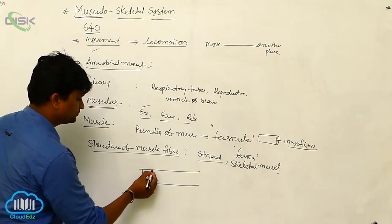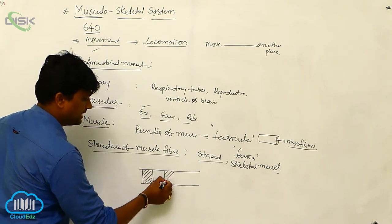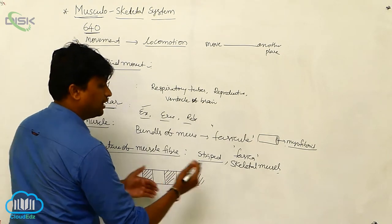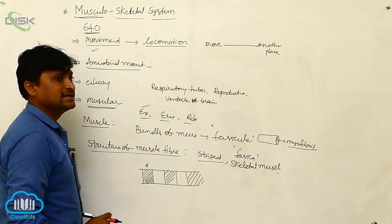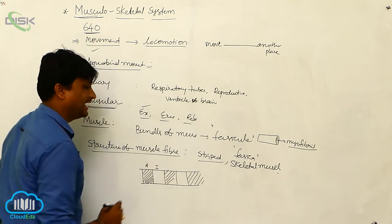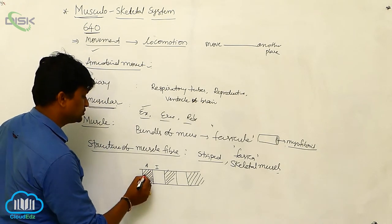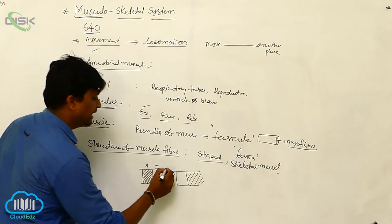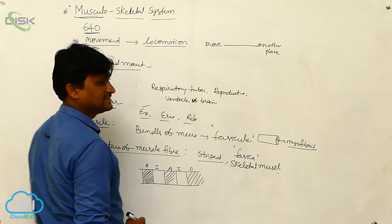The dark band is called the A band — that is, the anisotropic band. The light band is called the I band — the isotropic band. Dark band and light band alternate in the muscle fiber. The A band appears dark in color and the I band appears light in color. This alternating pattern is why we call it striped muscle.